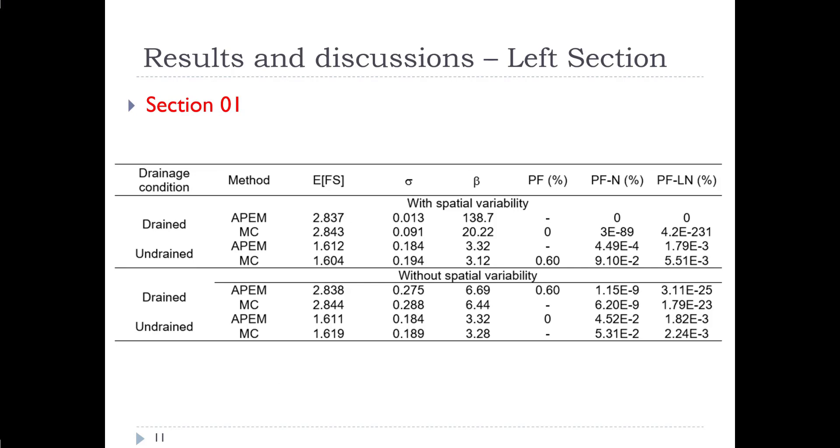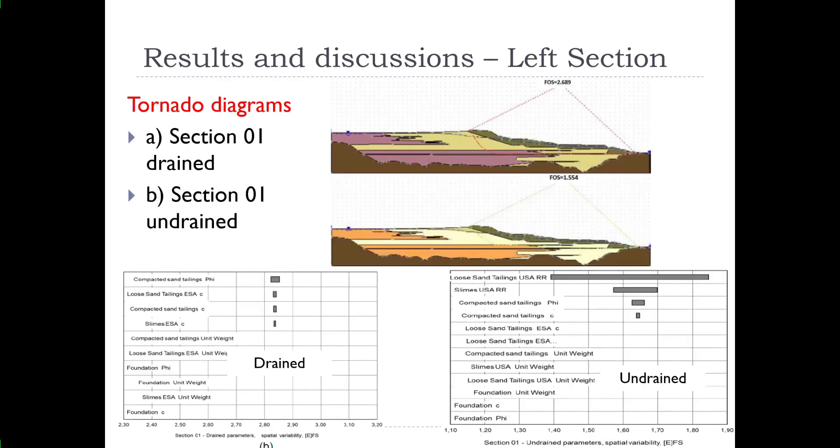So if we perform the analysis for section 01 and do a probabilistic analysis, this just shows the average factor of safety for undrained and drained for both the methods of alternate point estimate method and the Monte Carlo method. We can see we have high average factors of safety when average parameters are used. And then you can see on the right hand side of the chart the probability of failure in terms of percent for both normally and log normal distributions assumed. And the upper part of the chart is with spatial variability accounted for and the bottom part of the chart is with not counting for spatial variability. So in this we see very low probabilities of failure in all cases here, extremely small values. And for the left section, probability of failure is quite low.